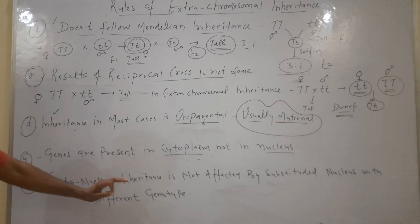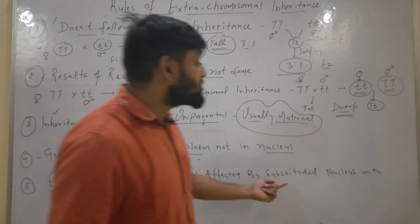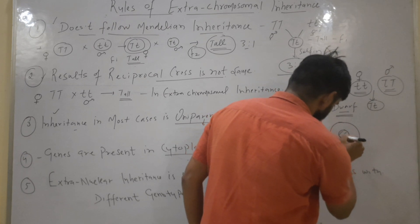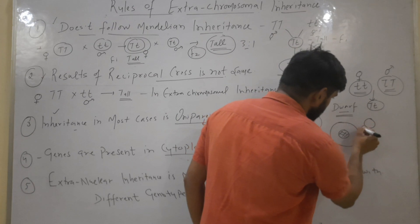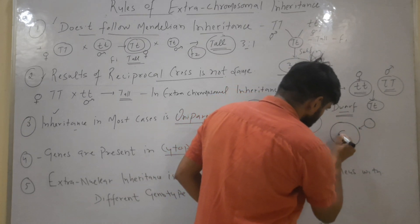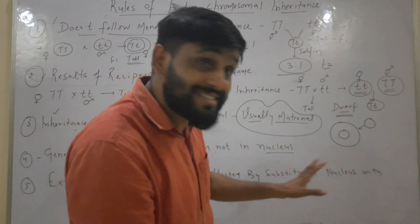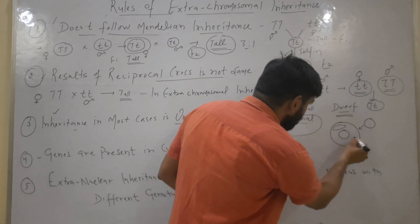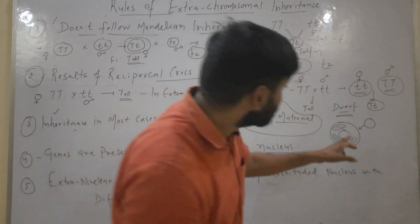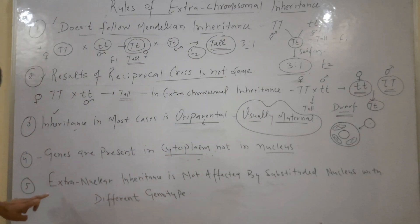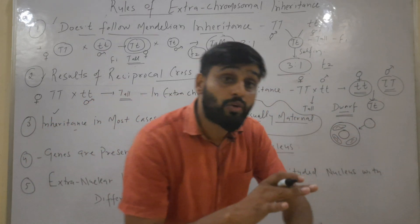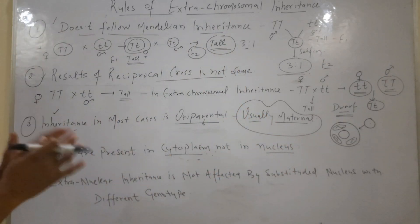The fifth rule is that extra-nuclear inheritance is not affected by substitution of the nucleus with a different genotype. Suppose this is a zygote with a nucleus — if this nucleus is substituted by another nucleus from a different species or different genotype, the nuclear gene genotype has changed. But the mitochondria inside still contain their own DNA, and these genes are not affected by the nuclear substitution. So extra-chromosomal inheritance is not affected by substitution of the nucleus.